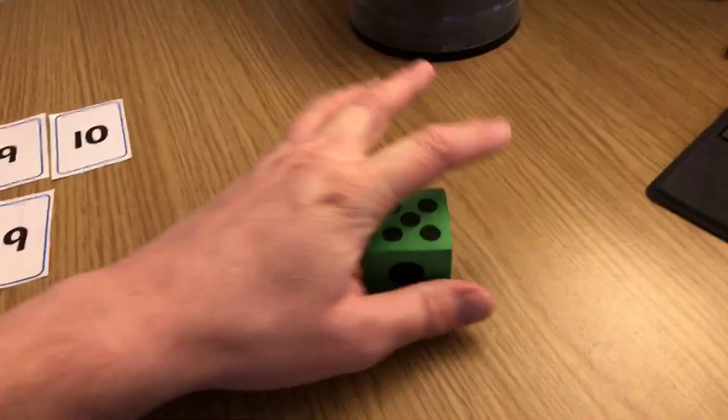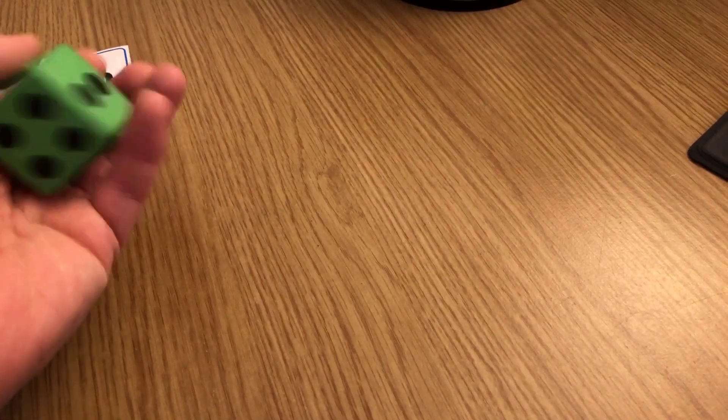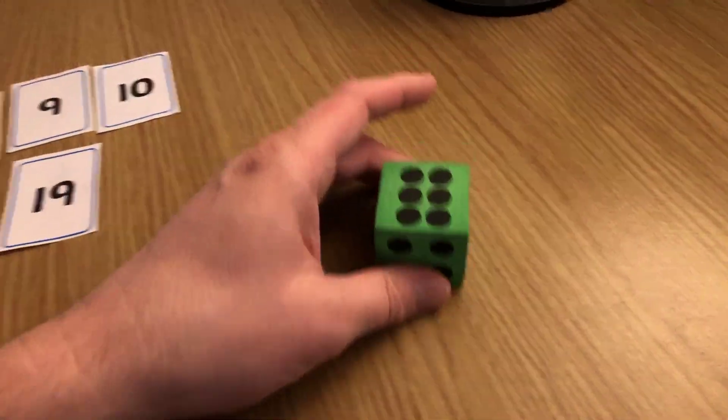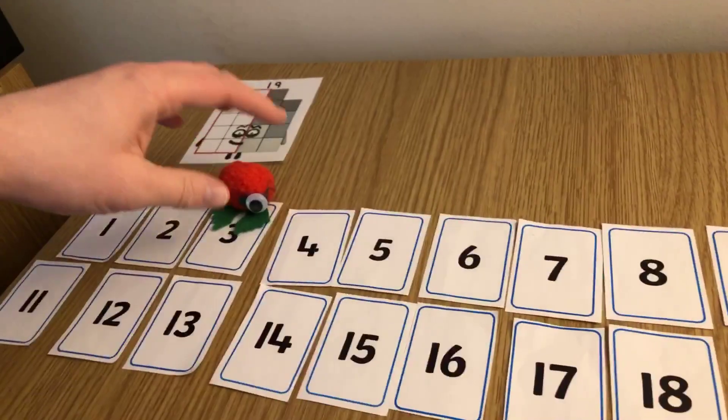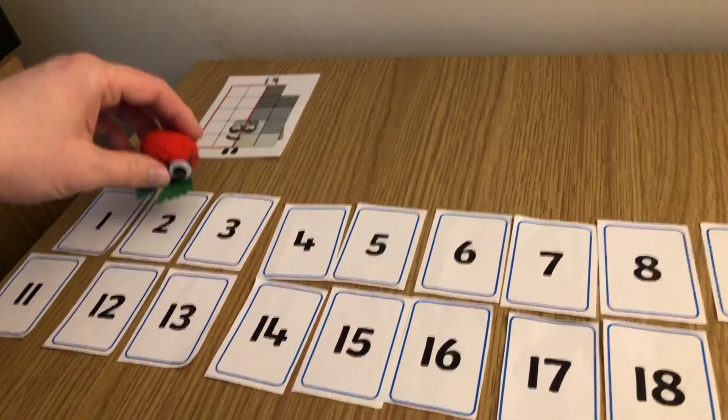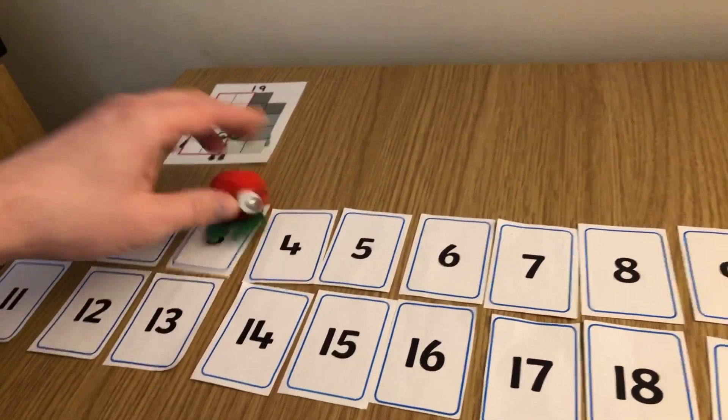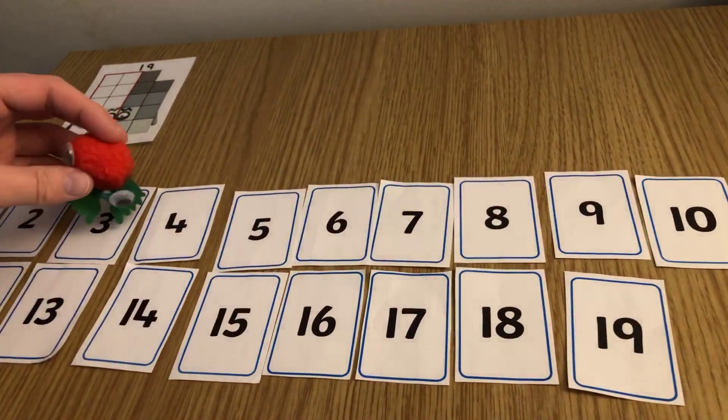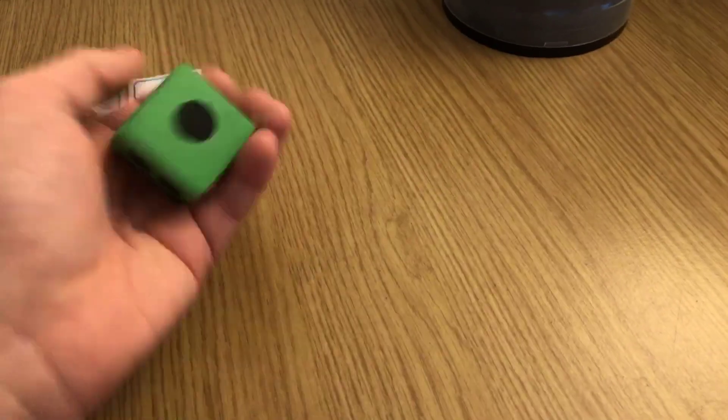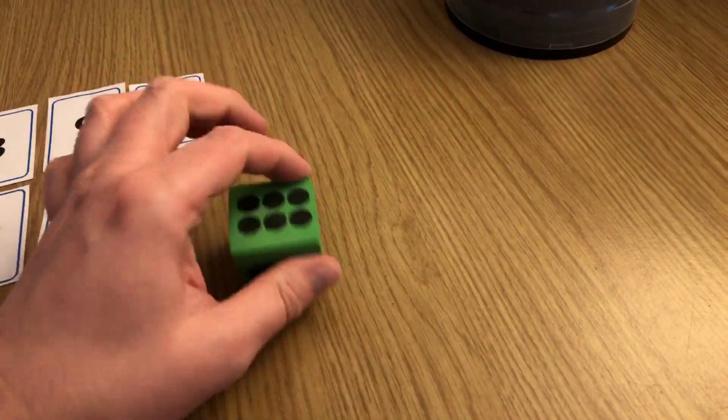Now let's see what happens next. 6. Oh, I can't really go back 6 because it's going to go into minus numbers. So no, it's too big, you have to roll again. Roll again. Another 6.